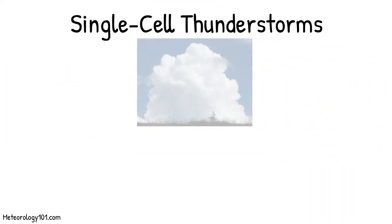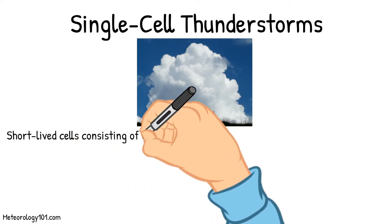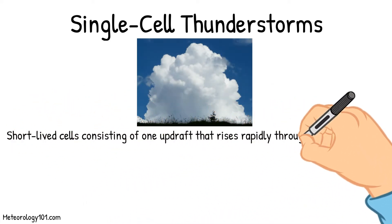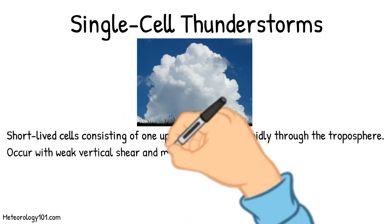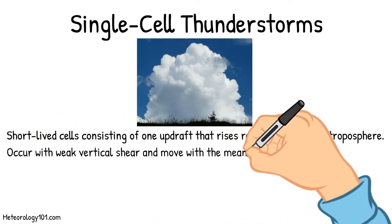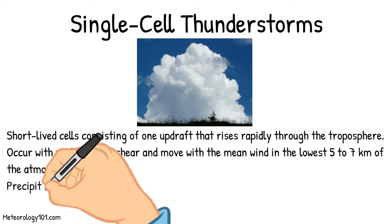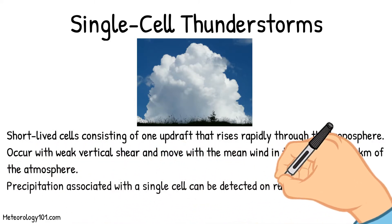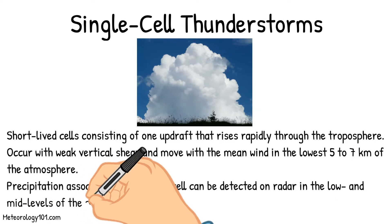Single-cell thunderstorms are short-lived cells consisting of one updraft that rises rapidly through the troposphere. They occur with weak vertical shear and move with a mean wind in the lowest 5 to 7 km of the atmosphere. Precipitation associated with a single cell can be detected on radar in the low and mid-levels of the storm.